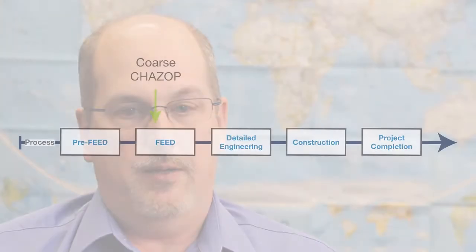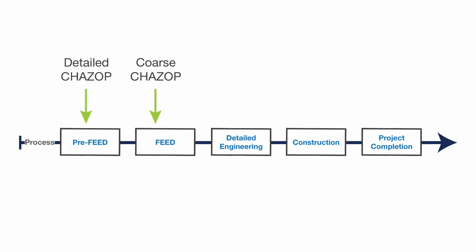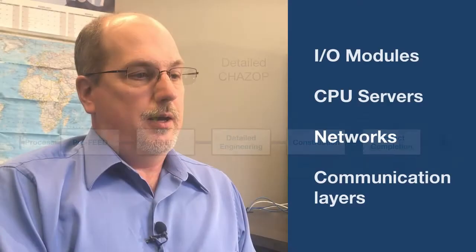A detailed design happens later, looking at every element. We look at I/O modules, CPUs, servers, networks, and different layers of communication as well, to try and determine individual failures and what they look like, what to do about them, and how to safeguard against them.